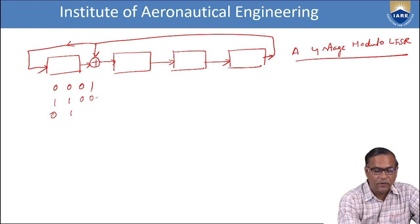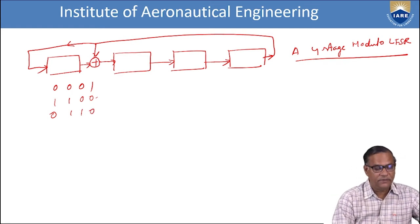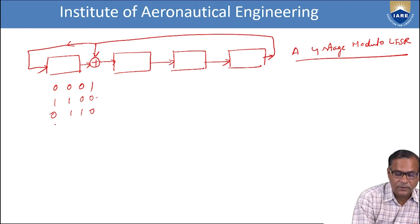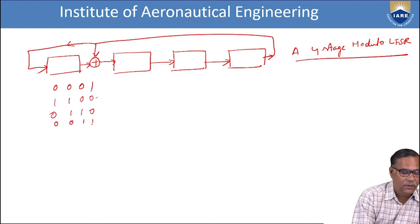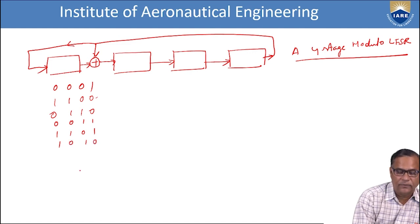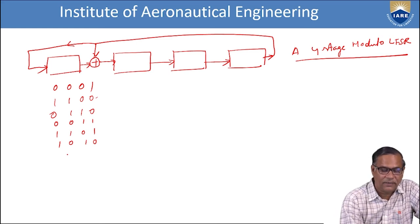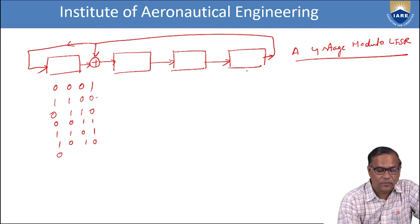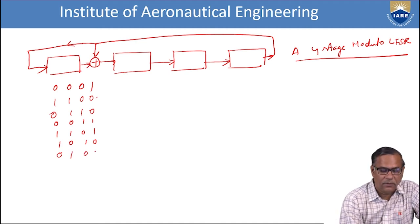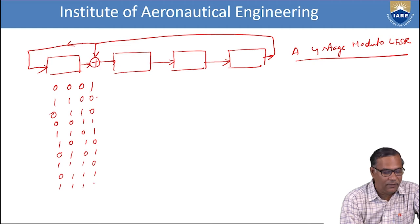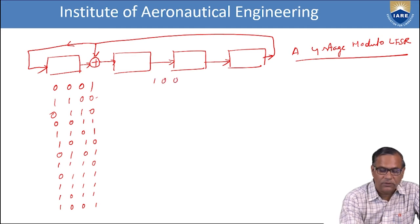Continuing the LFSR sequence from initial value 0001: you get 1001, 1100, 0110, 0011, then 1001... and step by step, the LFSR cycles through: 0001, 1001, 1100, 0110, 0011, 1101, 1110, 0111, 1011, 0101, 1010, 0101 — and so on. Through this simple feedback circuit using flip-flops, we are able to generate random test patterns. The sequence continues through: 1110, 1111, 0111, 1011, 1001, 0100, 0010, 0001, cycling back to the start.